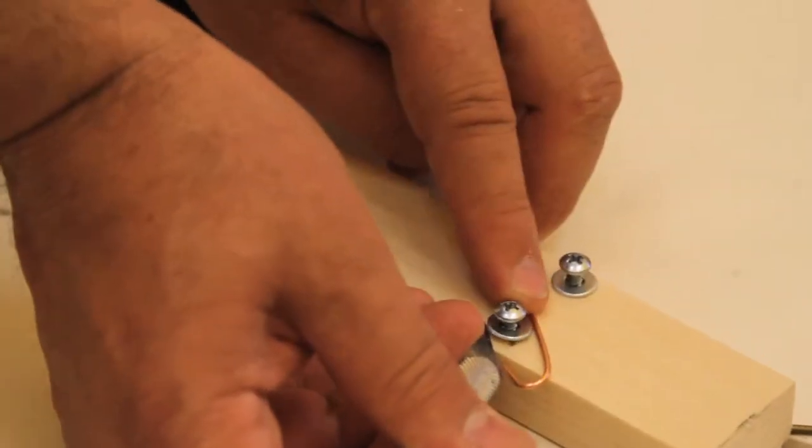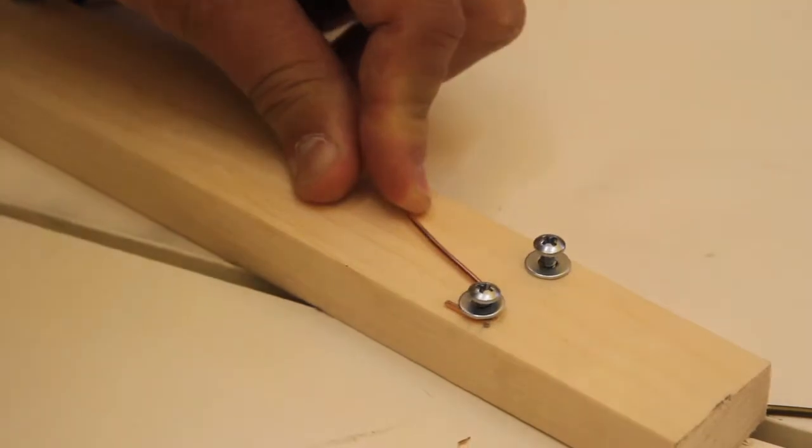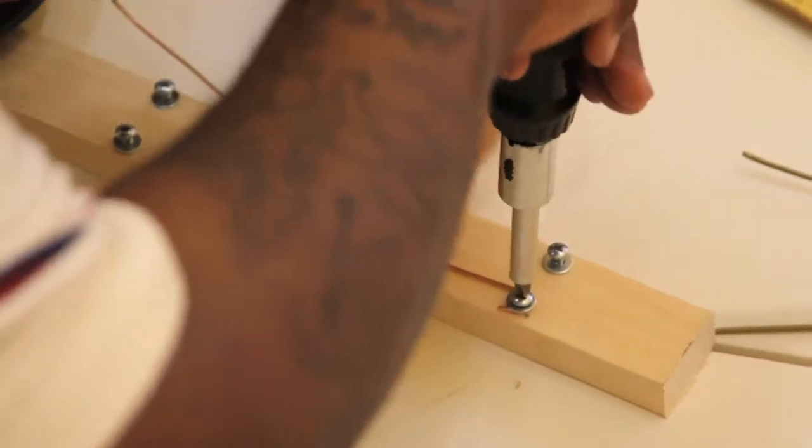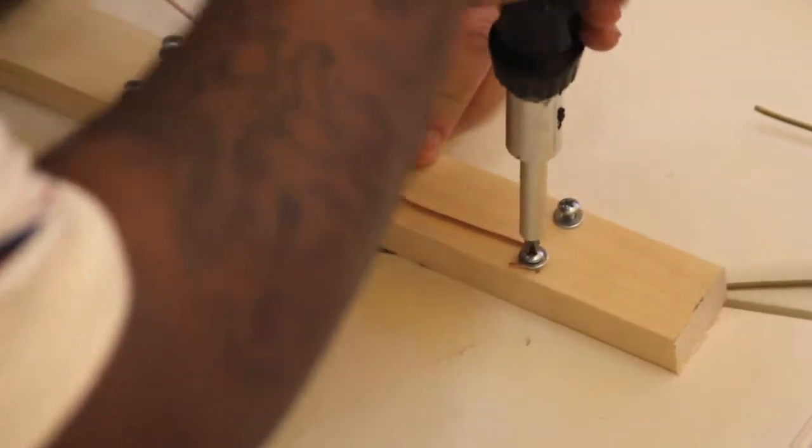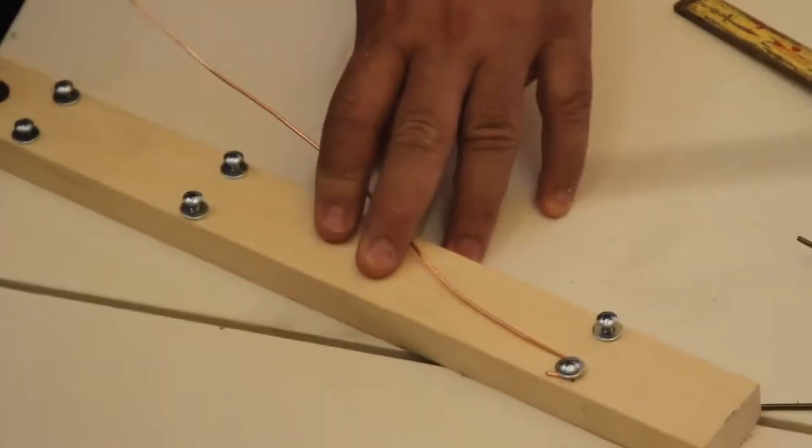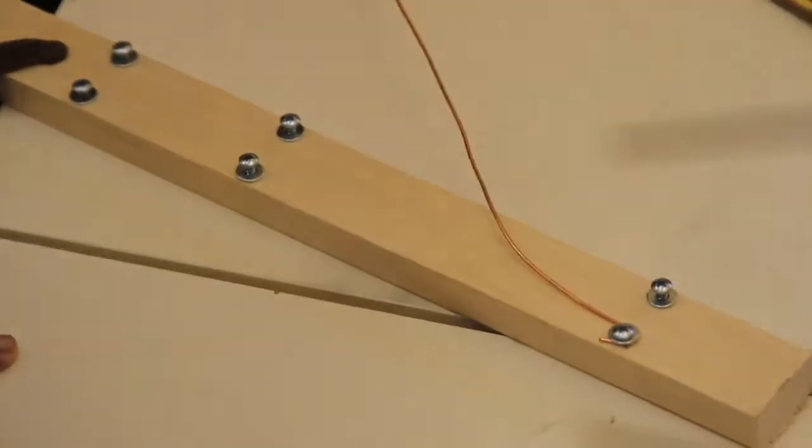I'm using this exacto knife instead of my fingernail just to get the washer to come up. You just want to turn it until you feel it tight and then stop. Cross at the top end and then cross at the bottom end.